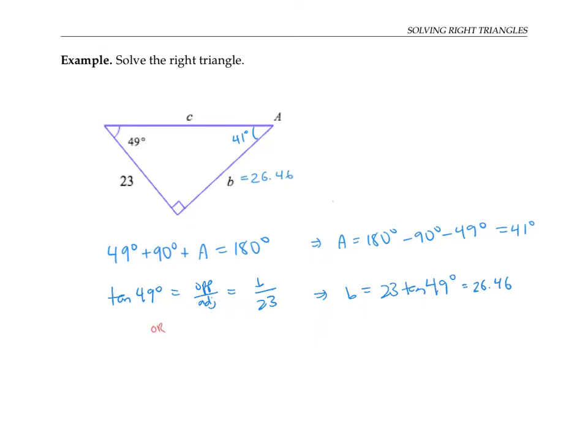Alternatively, we could use the fact that tan of 41 degrees is 23 over B. Since now, if we're looking at the angle here, 23 is our opposite and B is our adjacent. That's a little bit harder to solve algebraically. But we can write B tan 41 degrees equals 23, which means that B is 23 divided by tan 41 degrees. With a calculator that works out again to 26.46.